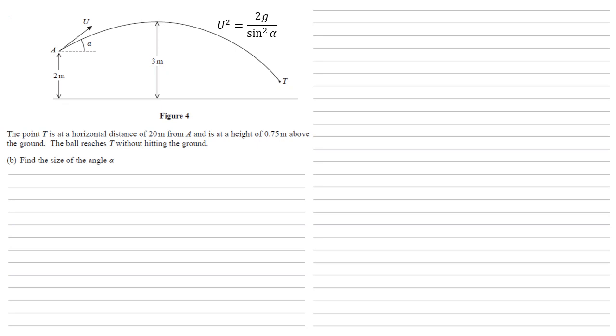The point T is at a horizontal distance of 20 metres from A and is at a height of 0.75 metres above the ground. The ball reaches T without hitting the ground. We want to find the size of the angle alpha. If we start off resolving horizontally, we're going to use the formula S equals U T because there's no acceleration in the horizontal plane. There's no air resistance in this question, for example.